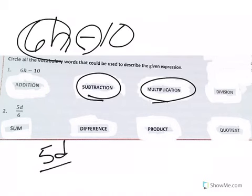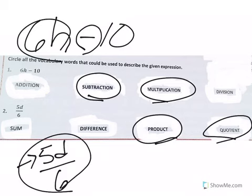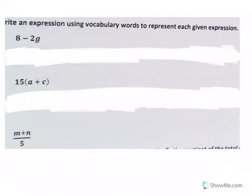In this next one, it's 5D divided by 6. Well, we do see the product, right? Because 5 times D. We also see a quotient because the whole thing is a division problem. It's a fraction, so it's a division problem.